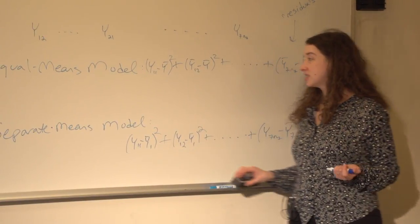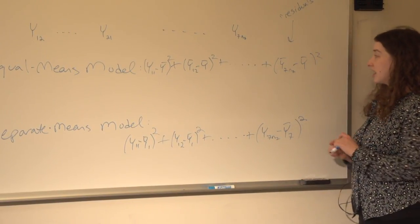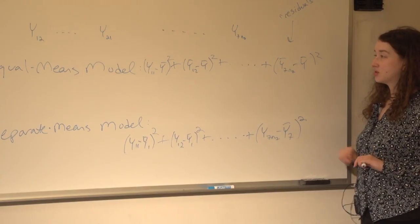So either a regression or an ANOVA, since they're the same thing, would allow me to compare the sums of square residuals from these two models.